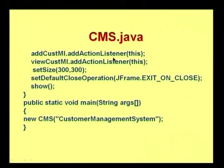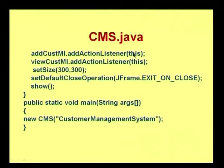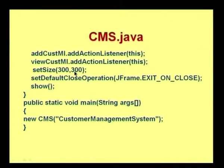Now I am adding the ActionListener for event handling mechanism. In this event handling mechanism I am trying to handle events raised by both menu items — add customer and view customer. I am specifying 'this' as the listener, which means the listener methods to be executed are available within the CMS frame itself. The CMS frame implements all the methods to be listened — ActionListener handles the ActionEvent via the actionPerformed method.